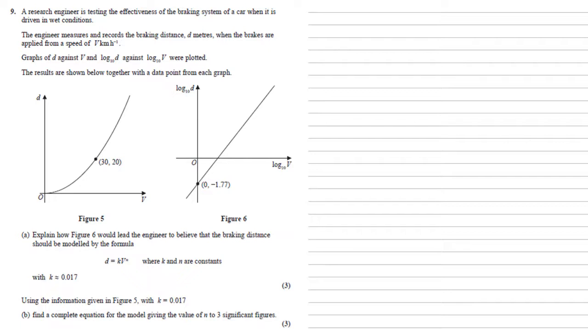A research engineer is testing the effectiveness of the braking system of a car when it is driven in wet conditions. The engineer measures and records the braking distance d meters when the brakes are applied from a speed of v kilometers per hour. Graphs of d against v and log base 10 d against log base 10 v were plotted. The results are shown below together with a data point from each graph.